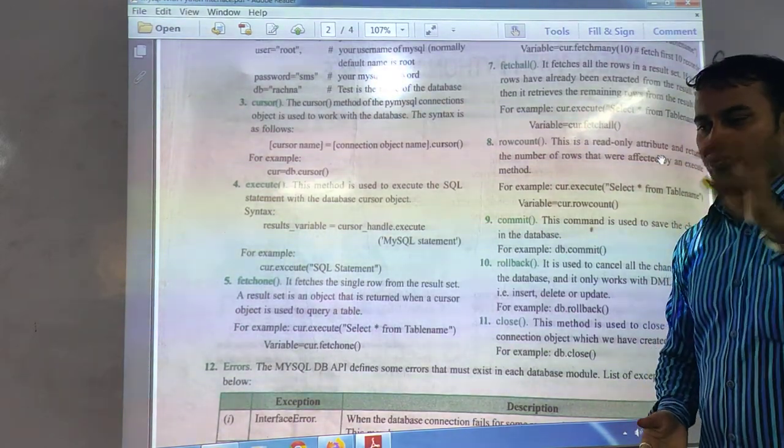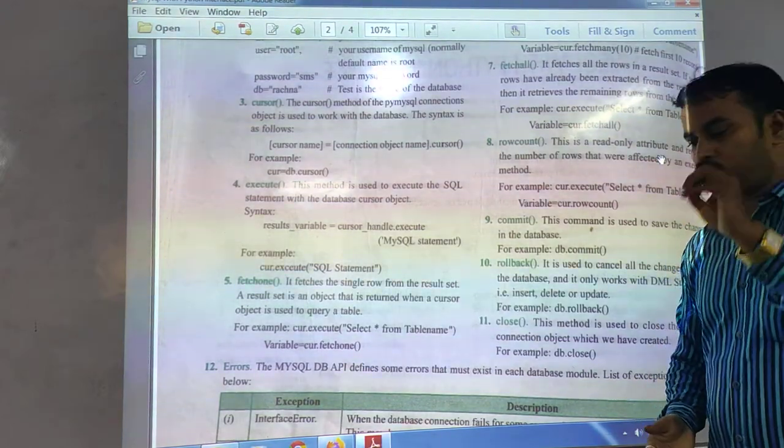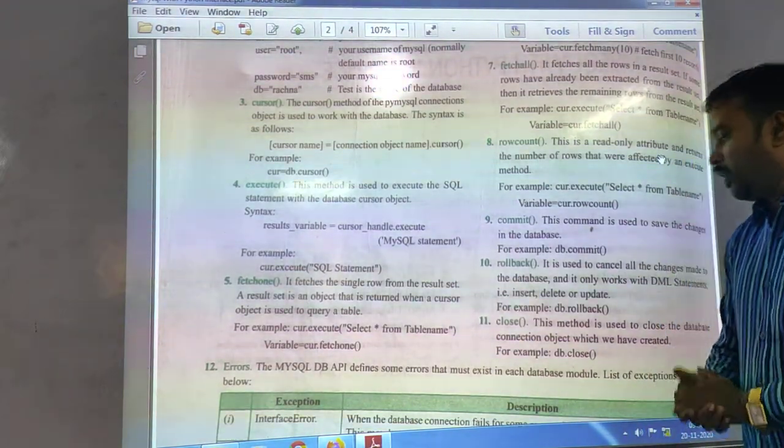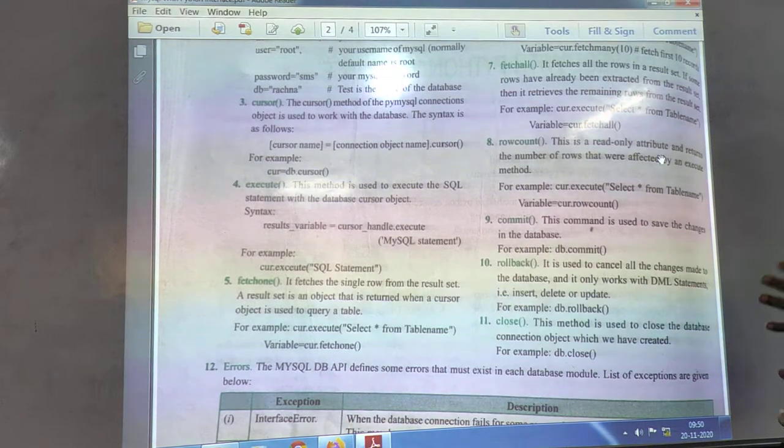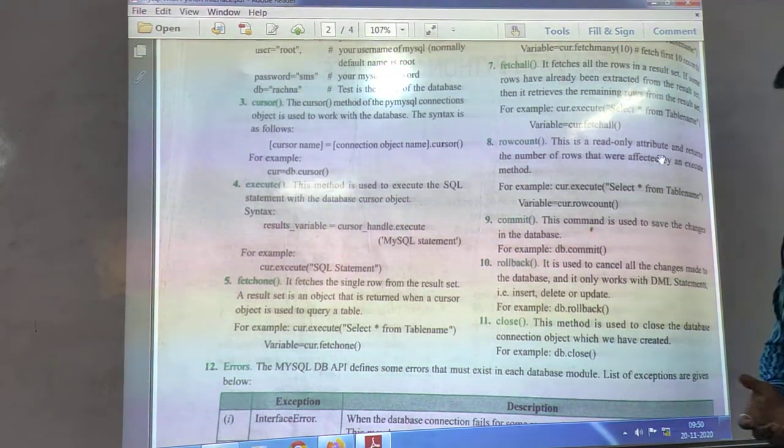Like in the file chapter also, you see when you use the open function, at the end you must use the close function to close the file. For the database also, the same concept is to be acquired here. That is, db.close to close the method.